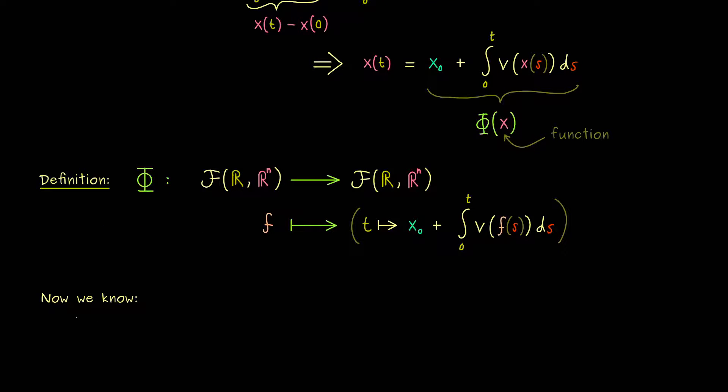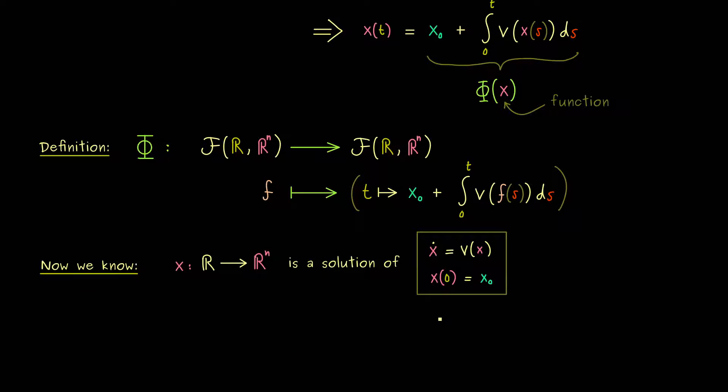And this one we can use now to write down a solution of the initial value problem. This is definitely something you should remember, because it's important for the next videos. Namely, a function x defined on the real number line is a solution of our given initial value problem if and only if Φ(x) = x. And this is what we call a fixed point equation, because the function x is a fixed point for the map Φ.